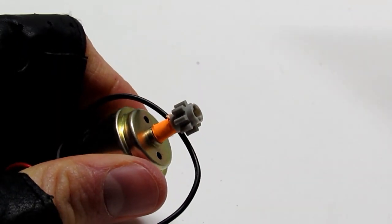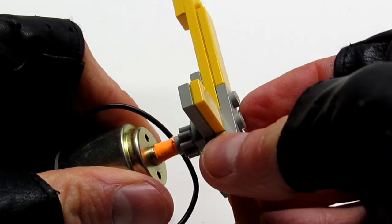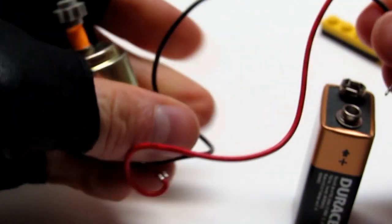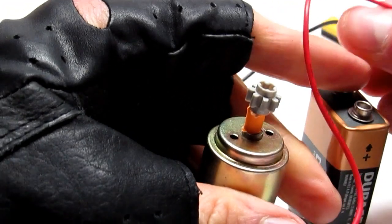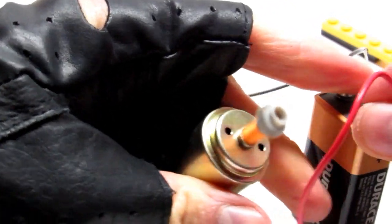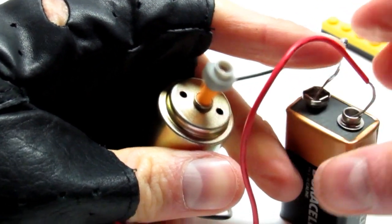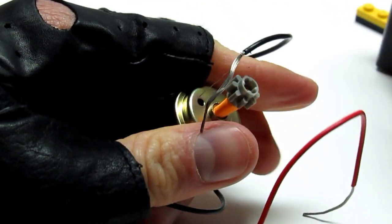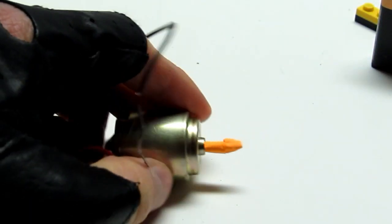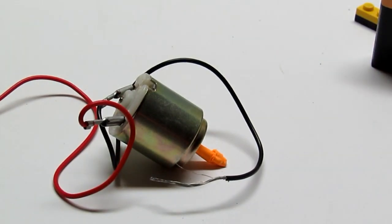So why spend the extra money when you can do this instead? You can just hook it up like this and it's going to work wonders for you. All you use is the nine volt battery, the engine, and those two cables. That's it, and you are all set my friends. That's all you have to do to enjoy your Lego creation.